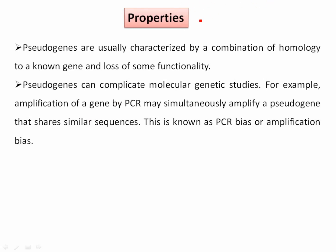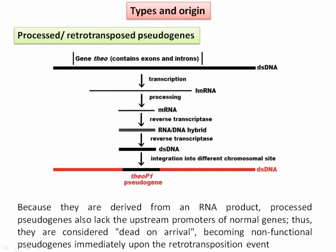The properties of pseudogenes: they are usually characterized by a combination of homology to a known gene, since they are related to real genes, but they have lost some functionality. Pseudogenes can also complicate molecular genetic studies. For example, amplification of a gene by PCR may simultaneously amplify a pseudogene because they share similar sequences. This is known as PCR bias or amplification bias.